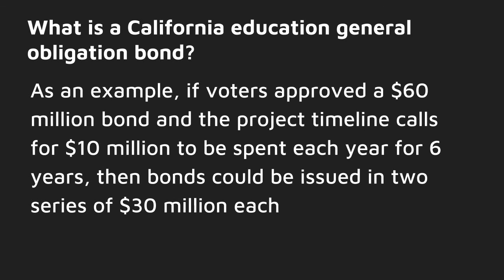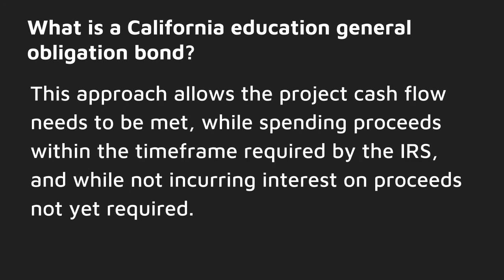As an example, if voters approved a $60 million bond and the project timeline calls for $10 million to be spent each year for six years, then bonds could be issued in two series of $30 million each, three years apart. This approach allows the project cash flow needs to be met, while spending proceeds within the time frame required by the IRS, and while not incurring interest on proceeds not yet required.